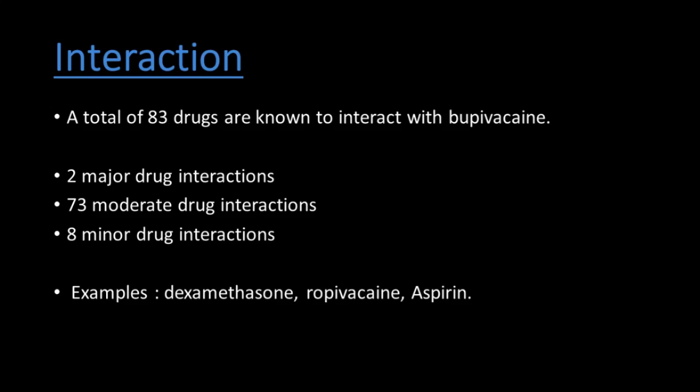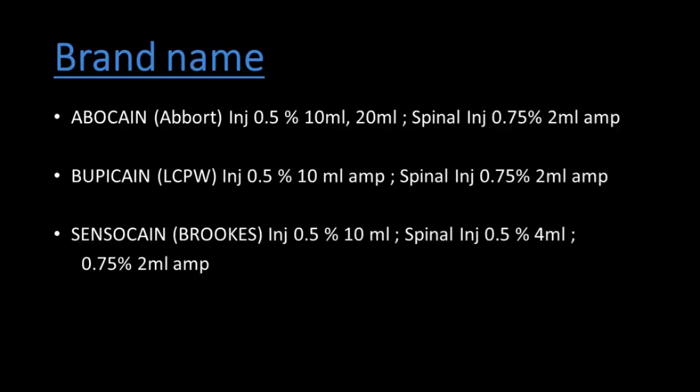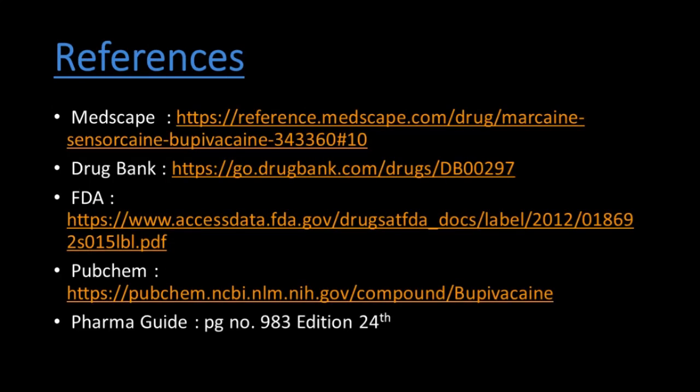Interactions: 83 total interactions — 2 major, 73 moderate, 8 minor. Examples include dexamethasone, aspirin, and Ropivacaine interactions. Adverse effects: tachycardia, vomiting, respiratory arrest, and pain and anxiety. Brand names: Abocaine, Bupivacaine, Sensorcaine. Available in 0.5% and 0.75% ampules in 2 ml, 4 ml, 10 ml, and 20 ml volumes. References: Mims, Drug Pack, FDA, and Pharma Guide page 983, edition 24.